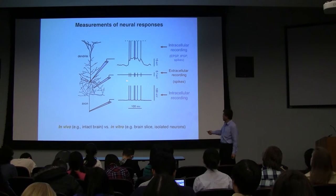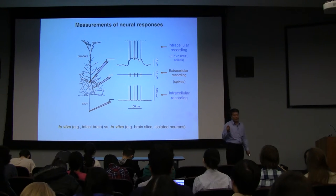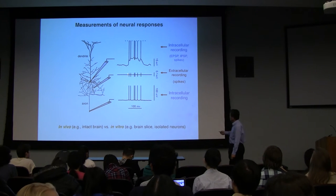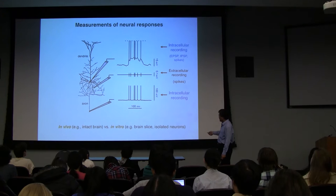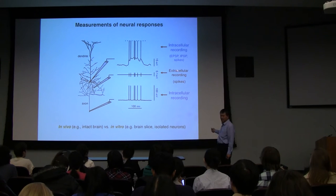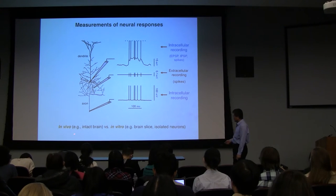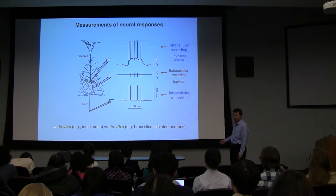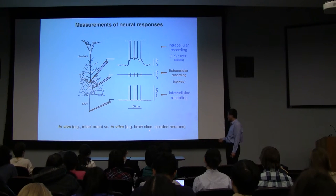With extracellular recording, you notice there are no bumps or details, because we use the all-or-none property of action potentials. Each action potential can be represented by just a line. You can also record from an axon. Essentially there are two kinds of recordings: extracellular recording from outside the cell, and intracellular recording from inside the cell. There are also two experimental conditions: in vivo recording in the intact brain, or in vitro recording from isolated neurons or brain tissue slices.